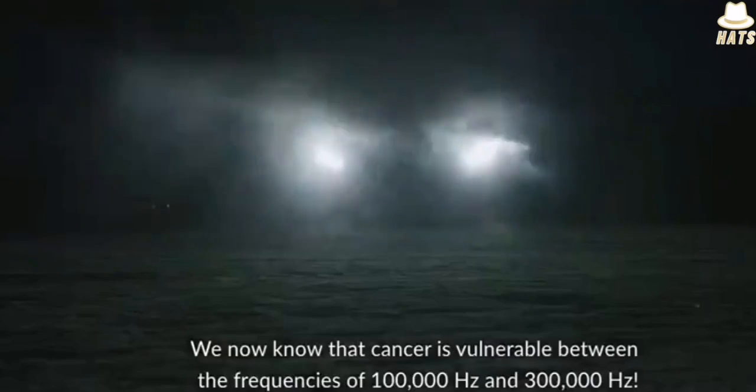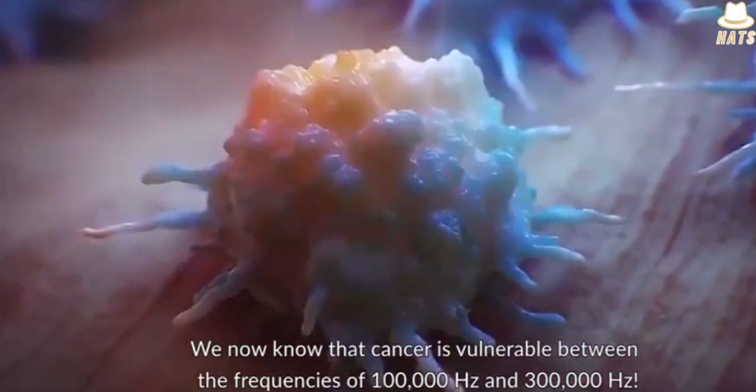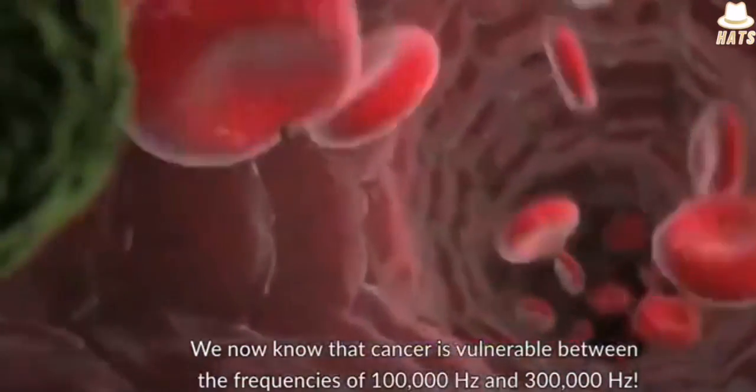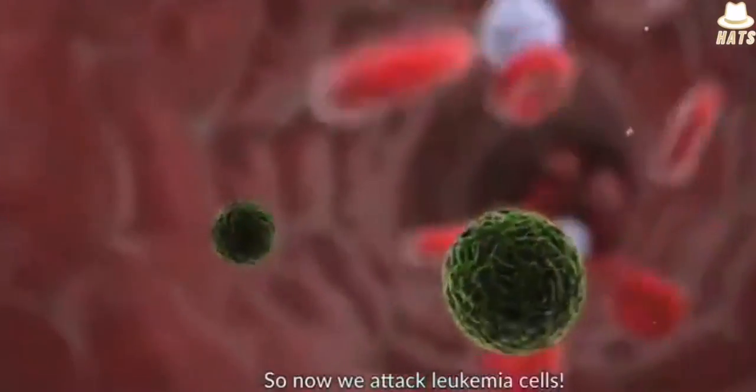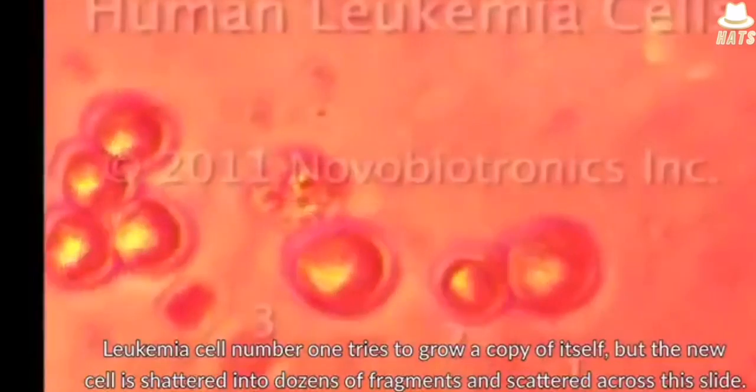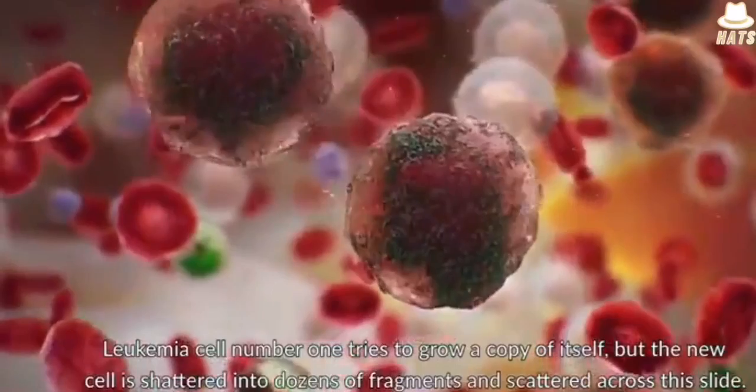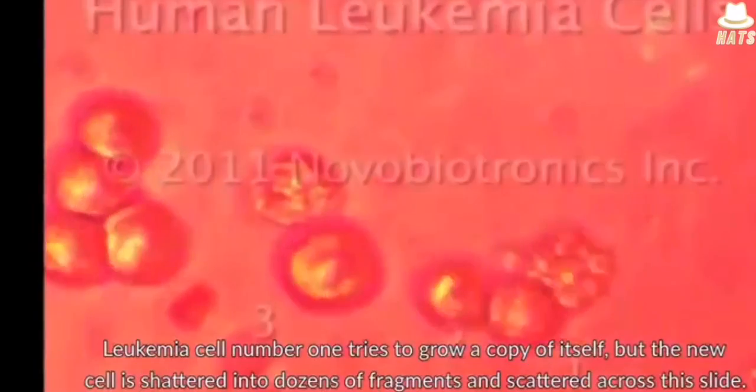We now know that cancer is vulnerable between the frequencies of 100,000 hertz and 300,000 hertz. So now we attack leukemia cells. Leukemia cell number one tries to grow a copy of itself. But the new cell is shattered into dozens of fragments and scattered across the slide.